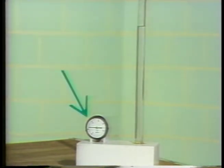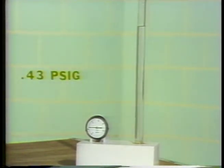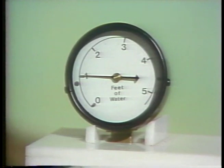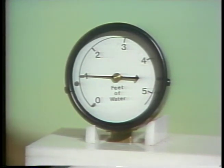Ordinarily, you might expect this gauge to indicate pressure. However, we can use the gauge to indicate level. Since 0.43 PSIG is equal to 1 foot of water, and 1 foot of water is equal to 0.43 PSIG, it is possible to use them interchangeably. What we've done is remove all of the pressure markings from this gauge and substituted markings that indicate level. Where the pressure gauge would indicate 0.43 PSIG, we've marked it as 1 foot of water. Now when water is added to the column, we can read the level directly from the gauge.